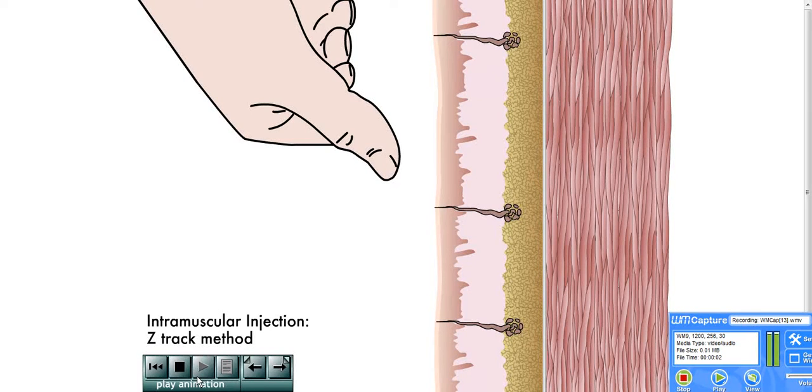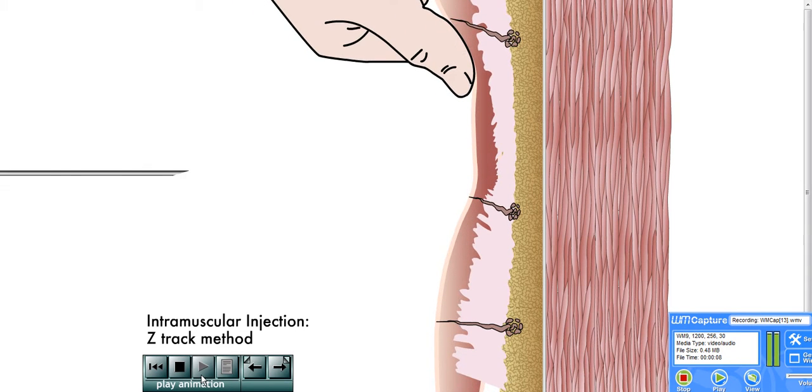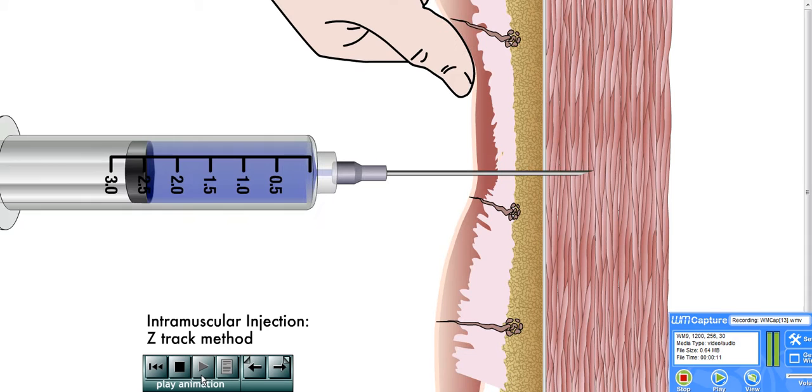A variant of the standard IM injection is called the Z-Track method. The difference here is that the skin and subcutaneous tissue are retracted on one side before inserting the needle.